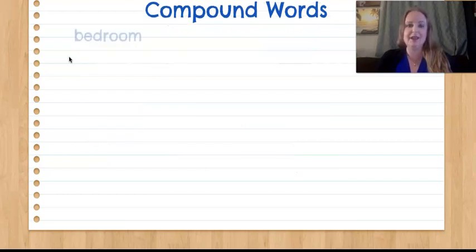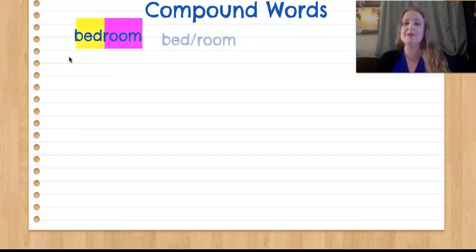Okay, let's try some. So in the compound word bedroom, do you see the two words inside that word? Bed and room. Bedroom. And you can show the slash to mark the two different words, which is what we're going to do with our benchmark stuff today.